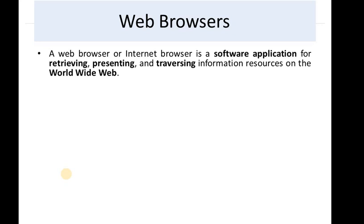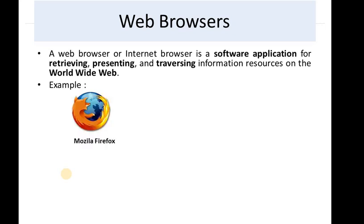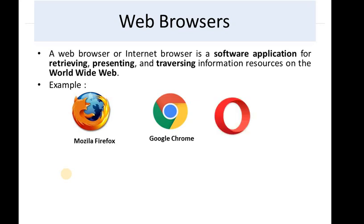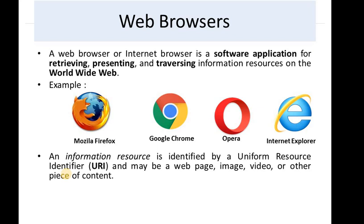That means, if you want anything from the web — www — you can get it on a web browser. So, what kind of web browser are you using? Mozilla Firefox, Google Chrome — my favorite one — Opera, and Internet Explorer.